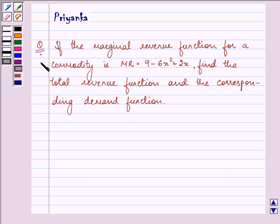Hello and how are you all today? The question says, if the marginal revenue function for a commodity is MR = 9 - 6x² + 2x, find the total revenue function and the corresponding demand function.